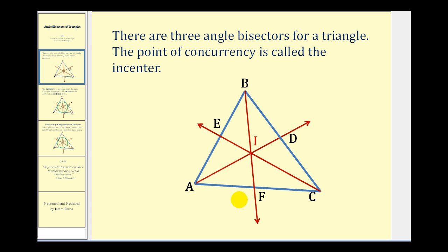Looking at the diagram here, ray CE bisects angle ACB, which creates two congruent angles — this angle here is congruent to this angle here. Similarly, ray AD bisects angle A into two smaller congruent angles, so these two angles are congruent. And then ray BF bisects angle B, so that these two angles are congruent.